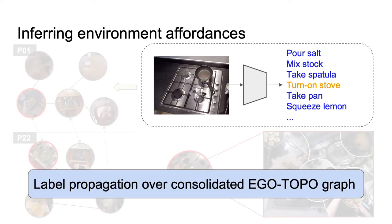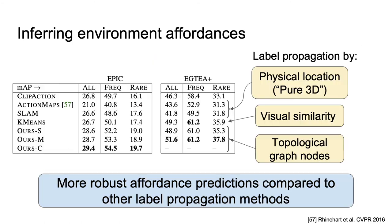We use this to propagate labels between frames to train an affordance model. Using our topological graph and cross-environment linking offers large improvements over methods that consider label propagation via physical proximity or visual similarity in a k-means clustering of frames.